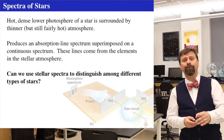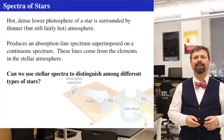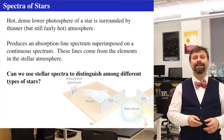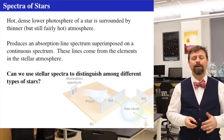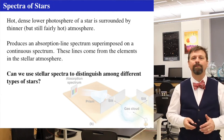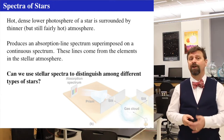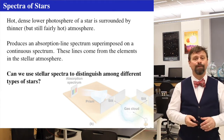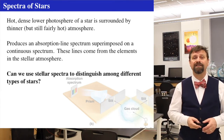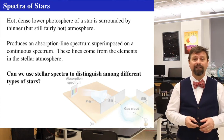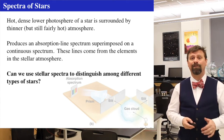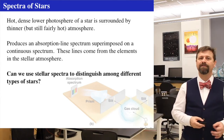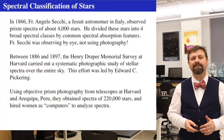That produces an absorption light spectrum according to Kirchhoff's laws of spectroscopy. So we can distinguish different kinds of stars from their spectra. When photography was invented in the latter part of the 19th century, people were taking spectra of stars to see how bright they are at various wavelengths, and making huge catalogs of stars. The spectral classification of stars actually began well before photography was invented.